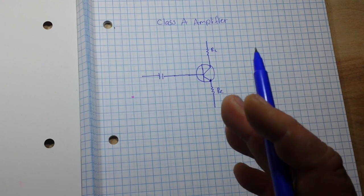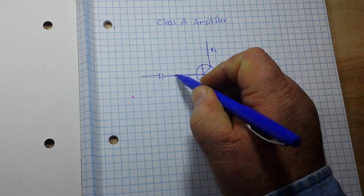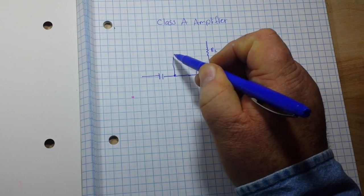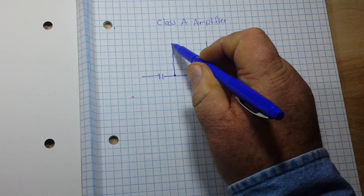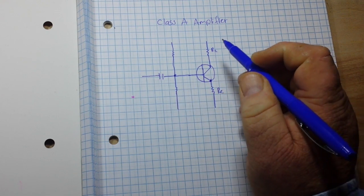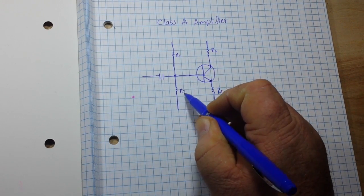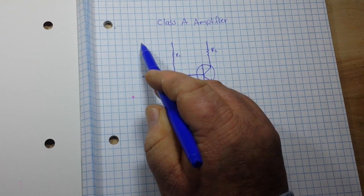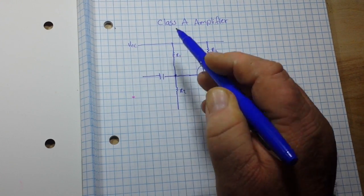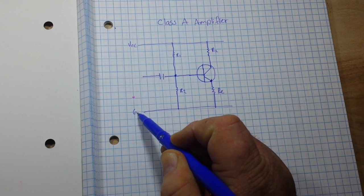We AC couple any input signal — we don't want DC coming through our signal if this is going to be an audio amplifier. And then we are going to bias the base of our transistor with just a little resistor divider network, R1 and R2. So up here we will have VCC, and down here we will have ground.